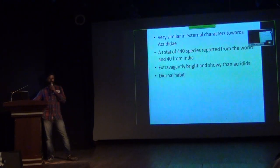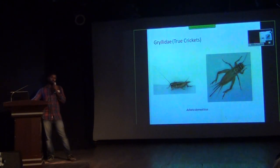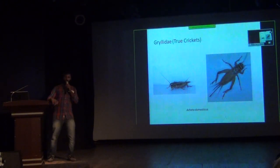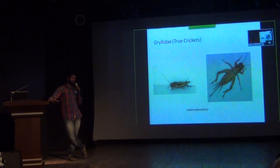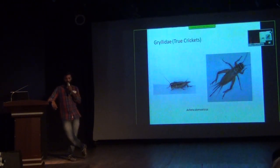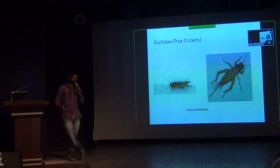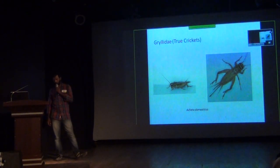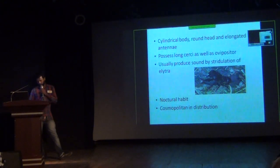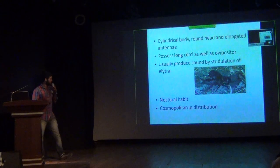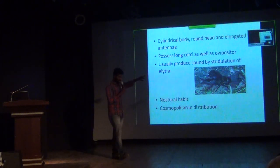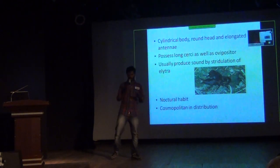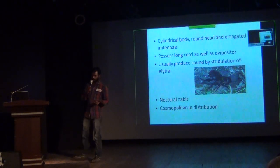There are around 440 species reported all over the world and 40 species from India. A very common Orthopteran found in your house is Acheta domesticus, the common house cricket. These come under the stridulatory families called Gryllidae, or true crickets. In this picture, you can see how they make that noise — by rubbing their elytra together. That is the particular sound you can hear from your house at night.